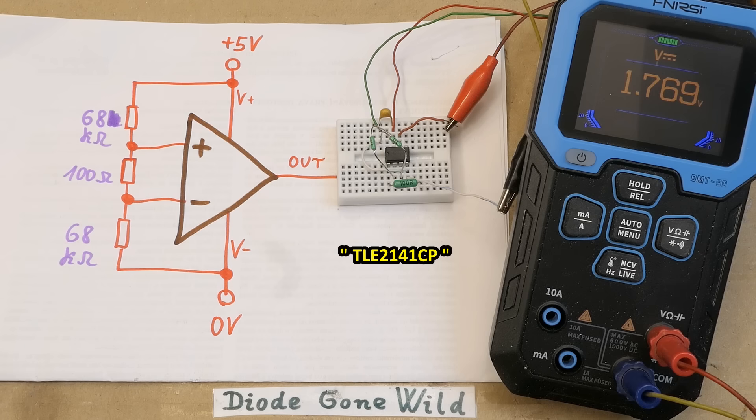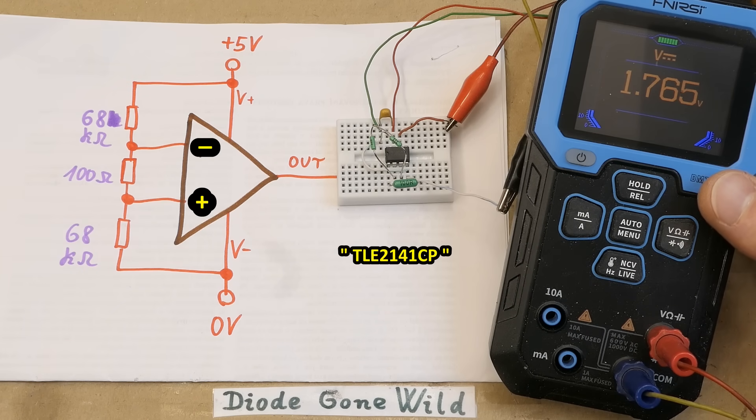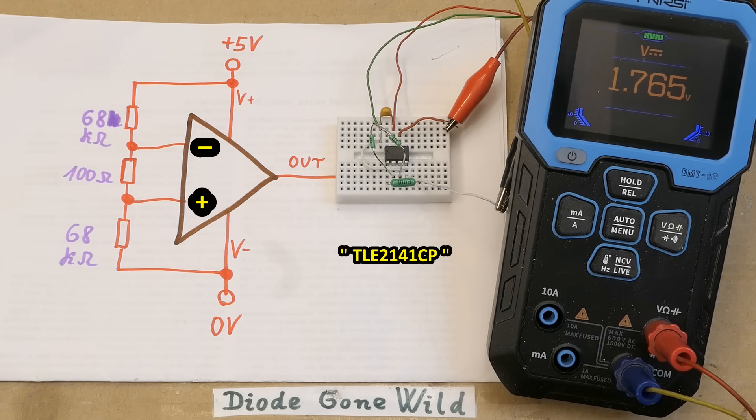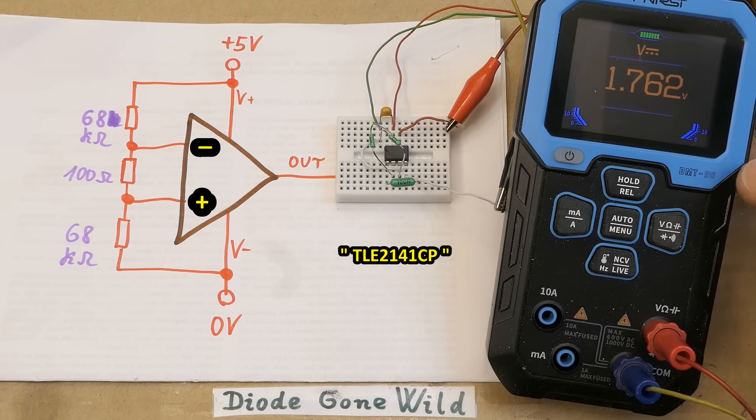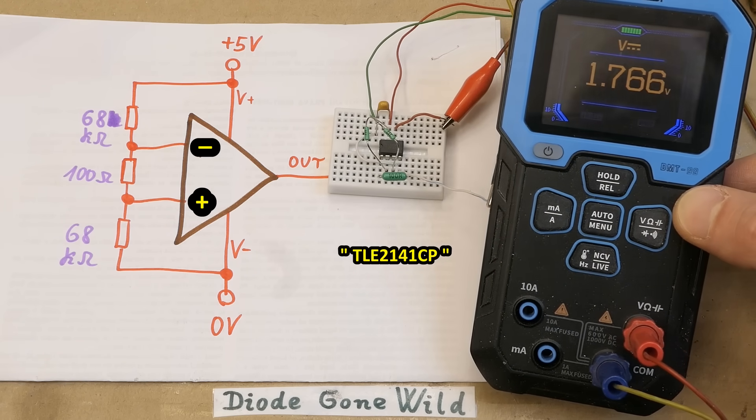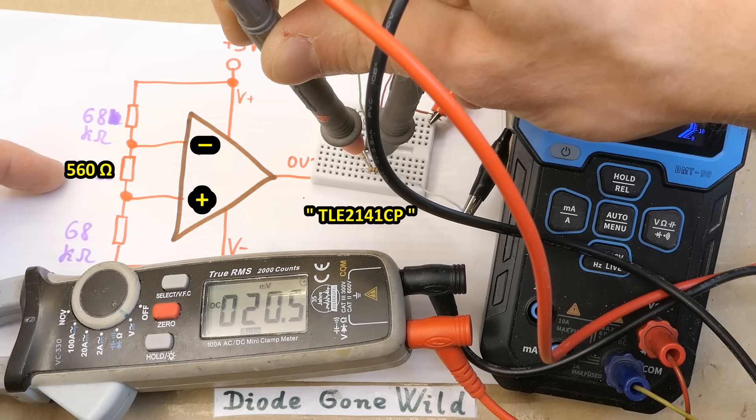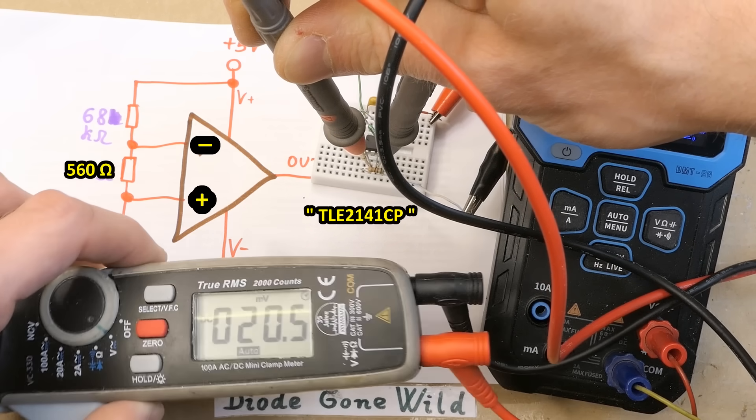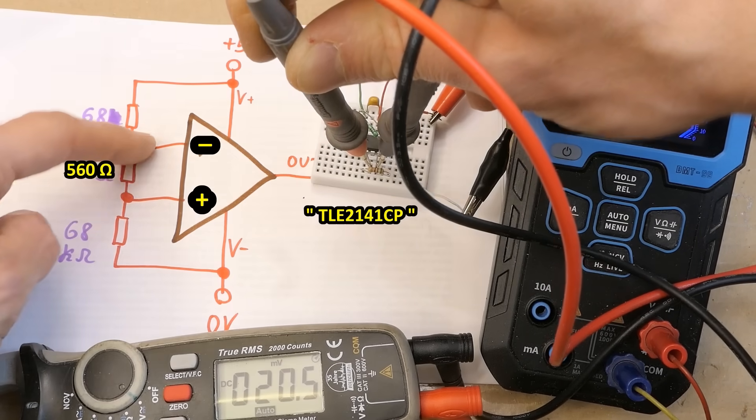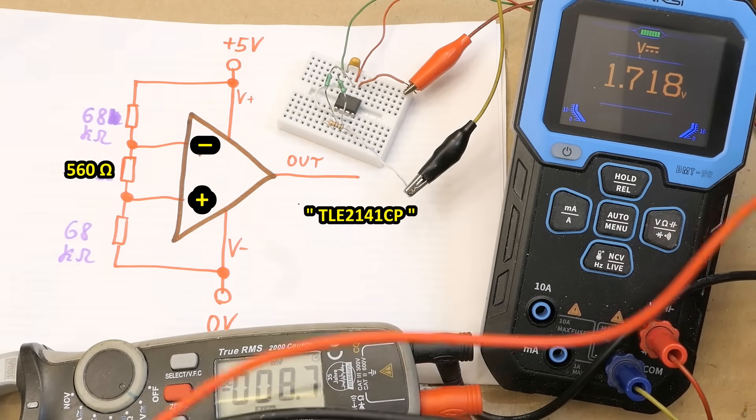Let's flip the inputs. Now the inverting one is actually 3.6 millivolts above and the output is 1.76 volts. The output is now low but this is a suspiciously high voltage for a low state, isn't it?